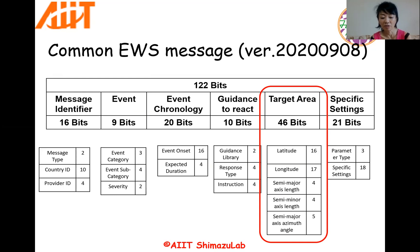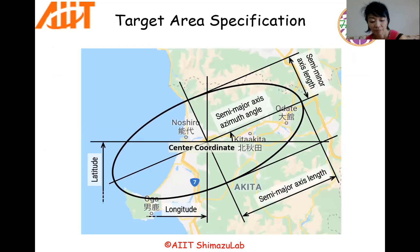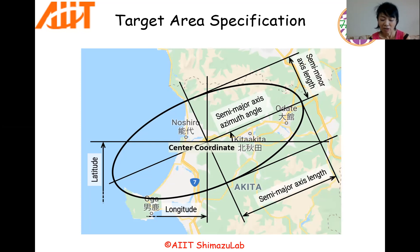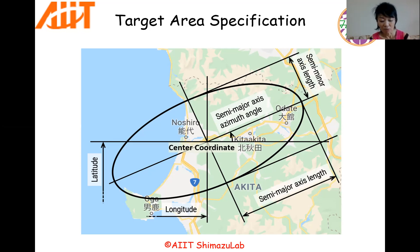I want to add an explanation about the target area. This is for identifying which area has the disaster identified in the event field. You can do that by using an ellipse. That means five numerical values are used: latitude, longitude, semi-major axis length, semi-minor axis length, and semi-major axis azimuth angle. You identify your target area in an ellipse after calculating your center coordinates by using these five numbers. One point is how to identify it — identification by using an ellipse as I said.